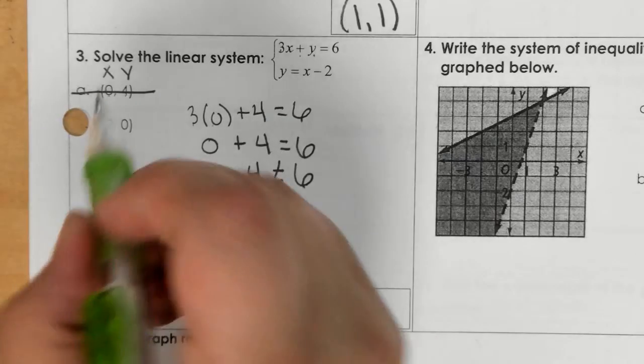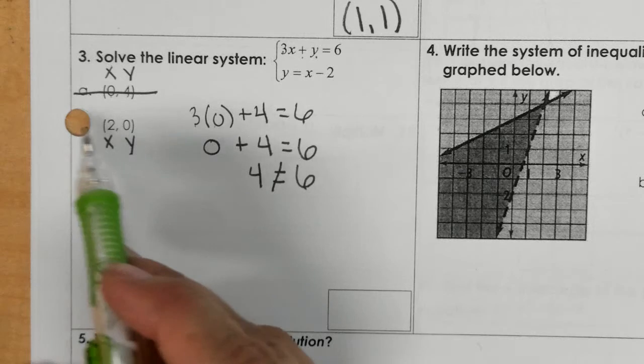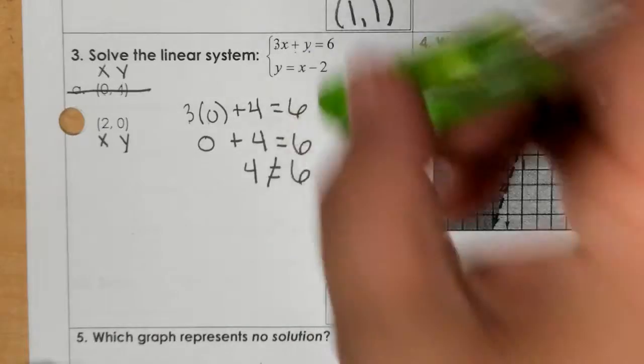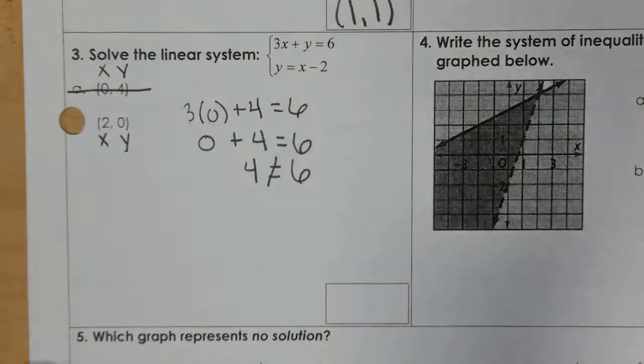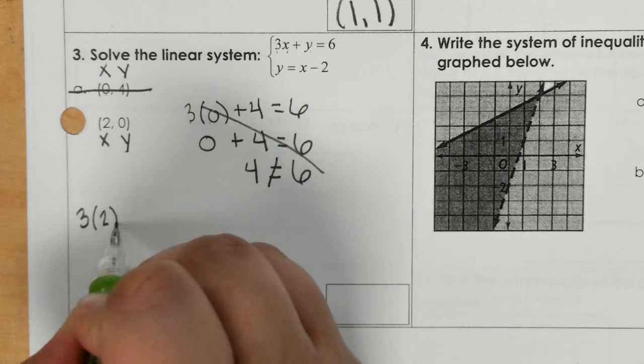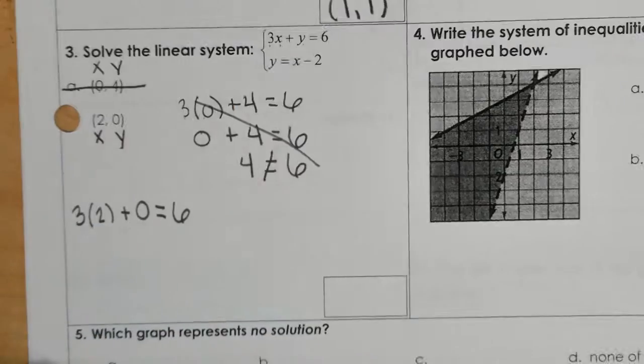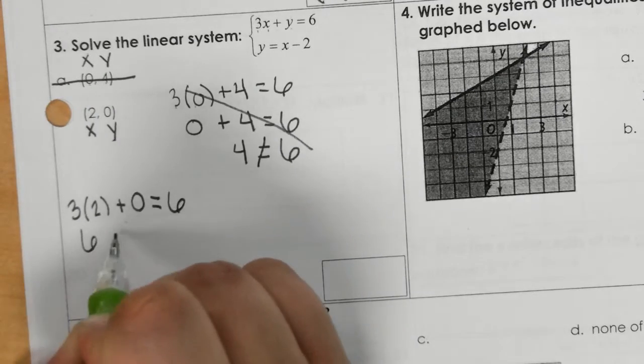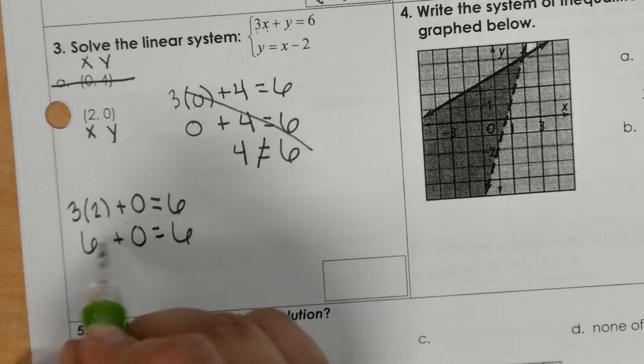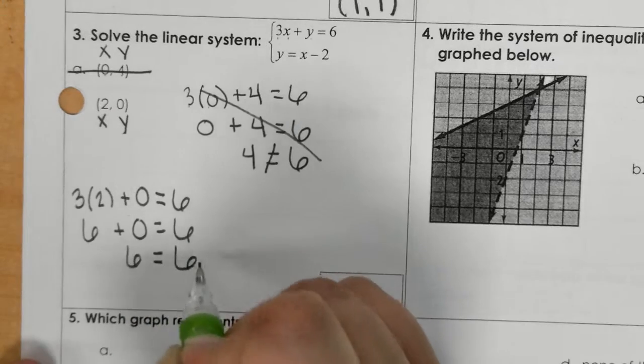So I'm going to try B. I know that B got punched out there. But 2, 0, x, y, we're going to plug it in. So 3 times 2 plus 0 equals 6. 3 times 2 is 6. If I add those together, we get 6 equals 6. So we know that's true.